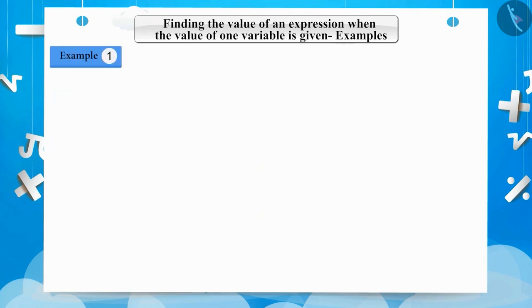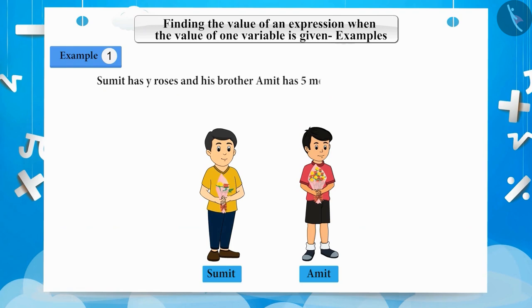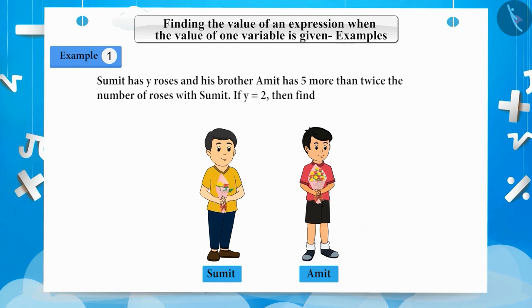Example 1: Sumit has y number of roses, and his brother Amit has 5 more than twice the number of roses Sumit has. If y is equal to 2, then find the total number of roses.